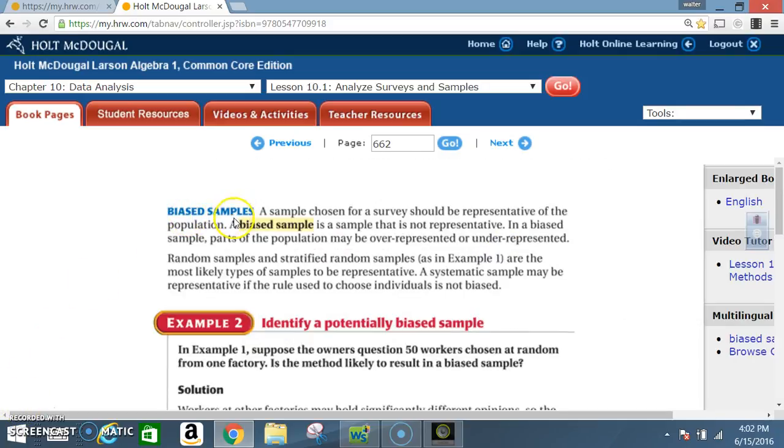Biased samples. A sample chosen for a survey should be representative of the population. A biased sample is a sample that is not representative. In a biased sample, parts of the population may be over-represented or under-represented. Random samples and stratified random samples, as in example 1, are the most likely types of samples to be representative. A systematic sample may be representative if the rule used to choose individuals is not biased.